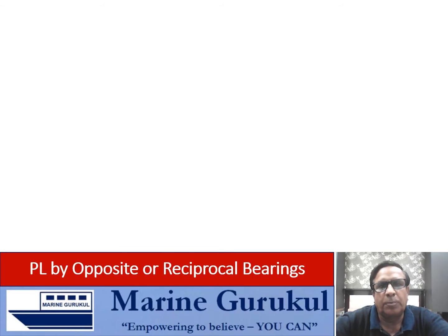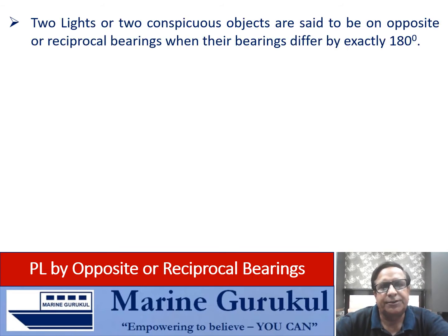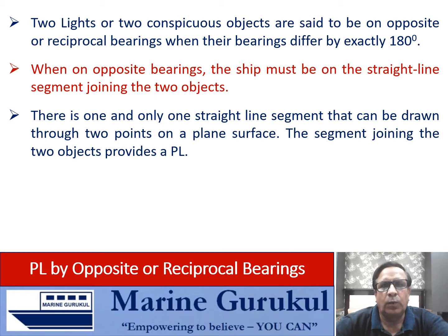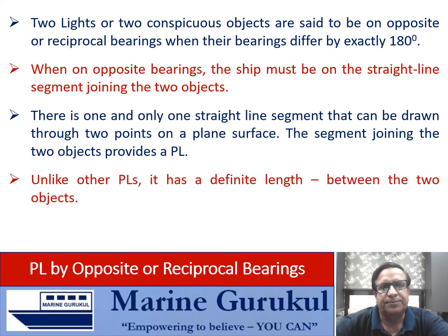Next is PL by opposite or reciprocal bearings. Two lights or conspicuous objects are said to be on opposite or reciprocal bearing when their bearings differ exactly by 180 degrees. When on opposite bearings, the ship must be on the straight line segment joining the two points or objects. There is one and only one straight line segment that can be drawn through two points on a plane surface. The segment joining the two objects provides the position line. Unlike other PLs, this PL has a definite length — only between the two conspicuous points — and cannot be indefinitely extended.